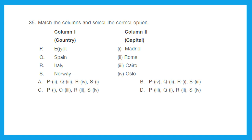Question 35: Match the columns — countries to their capitals. P, Egypt — the right answer is Cairo. Q, Spain — matches Madrid. R, Italy — matches Rome. S, Norway — it is Oslo. So we get P-3, Q-1, R-2, and S-4. The right option is option D.